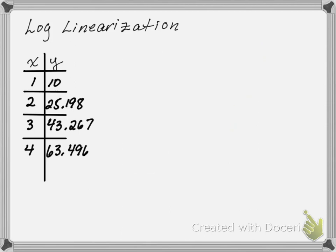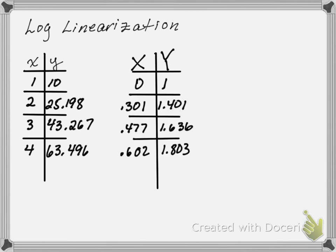The first step in log linearization is to take the data that you're given and to log it. I'm going to call the log of the X capital X and the log of the Y data capital Y. And what I simply do here is take each of the data points here in the table on the left, log it, and place it in the table on the right.